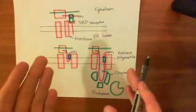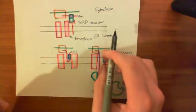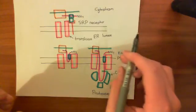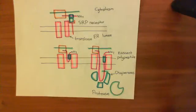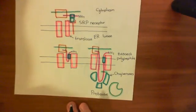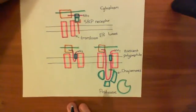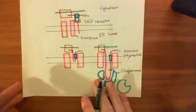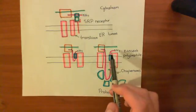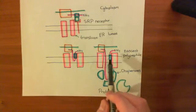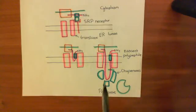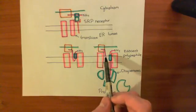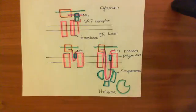The protein just dissociates from the translocon, and this signal sequence region remains within the ER membrane — it's the bit that spans the membrane. So that's how you get a type 2 membrane-spanning protein. I should stress that type 2 proteins won't ever have one of these transfer signals that we had in the case of the type 1s, because they don't need it. They don't need another portion to come and bind to the translocon. They have this signal sequence that was there from the start.